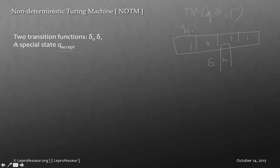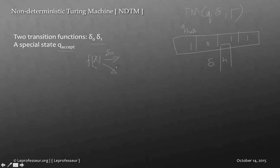In the deterministic Turing machine you had Q states and one special state: halt. But in the non-deterministic Turing machine you have two transition functions. At each step, for each input, the machine can be mapped via delta 0 or it can go to delta 1 — the next state depends on which route it takes, either the delta 0 route or the delta 1 route.